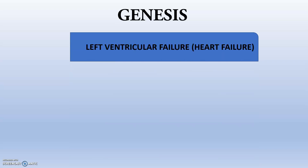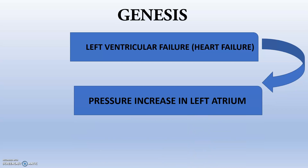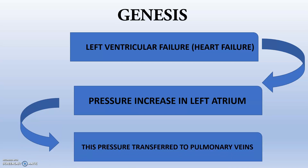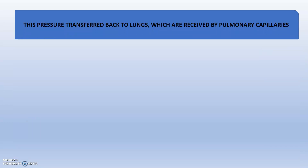First of all, left ventricular failure — commonly known as heart failure — leads to increased pressure in the left atrium. This pressure is transferred to the pulmonary veins, because pulmonary veins bring oxygenated blood into the left atrium. The pressure is then transferred back to the lungs via the pulmonary veins, and is received by the pulmonary capillaries.